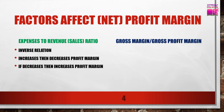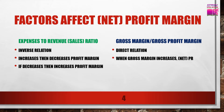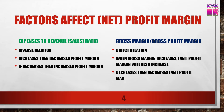Gross margin or gross profit ratio directly affects the profit margin or net profit ratio — they have a direct relationship. If gross profit ratio or gross margin increases, net profit will increase. If gross profit margin decreases, net profit margin will also decrease. So expenses to sales ratio has an inverse relation with profit margin, and gross profit ratio has a direct relation with profit margin.